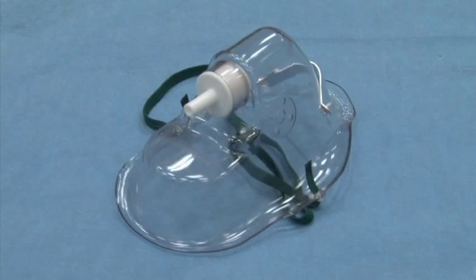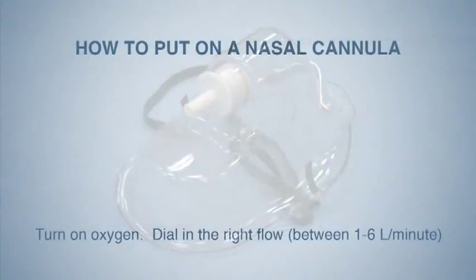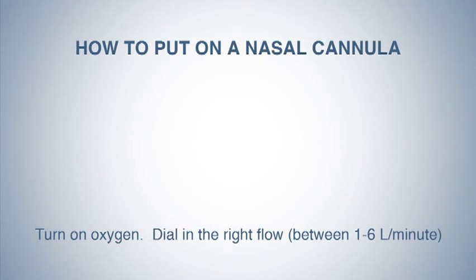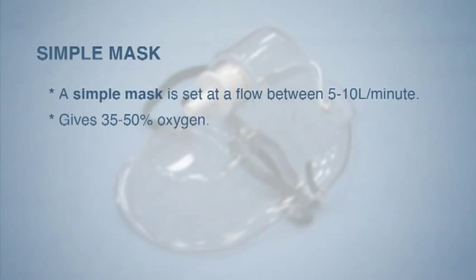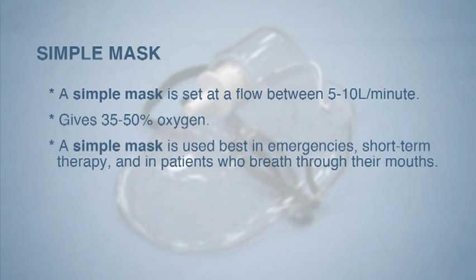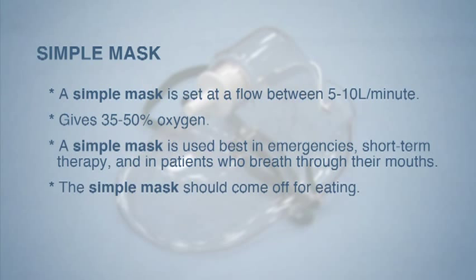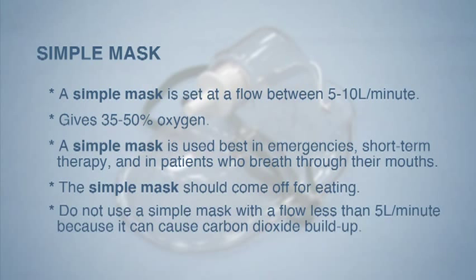The next oxygen device is the simple mask. A simple mask is set at a flow between five and ten liters per minute and gives 35 to 50 percent oxygen. A simple mask is used best in emergencies, short-term therapy, and in patients who breathe through their mouths. The simple mask should come off for eating. Do not use a simple mask at a flow less than five liters per minute because it can cause carbon dioxide buildup.